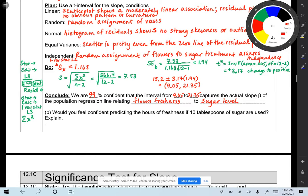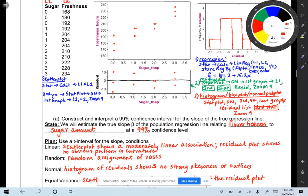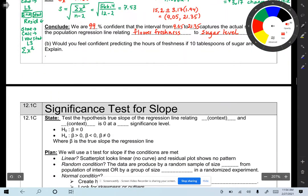And for part B, would you feel confident predicting the hours of freshness if 10 tablespoons of sugar are used? Explain. Well, if you look at your graph, your very first graph that we did, it was the scatter plot. It goes all the way to 3 tablespoons of sugar. However, using 10 tablespoons would not be appropriate because it's outside our table of study.